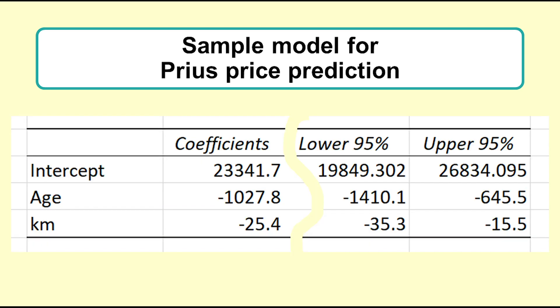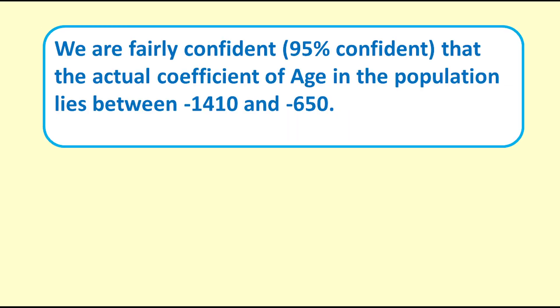In Excel, we can see that for age, the 95% confidence interval is given as negative 1410.1 to negative 645.5. It is sensible to round this to negative 1410 to negative 650. We can interpret this to say that we are fairly confident, 95% confident, that the actual coefficient of age in the population lies between negative 1410 and negative 650.